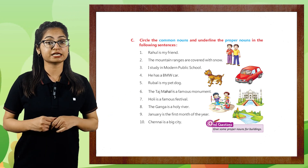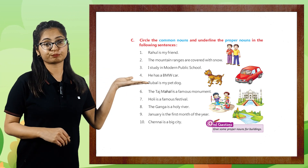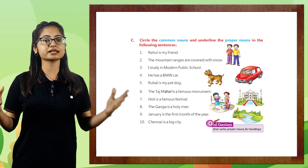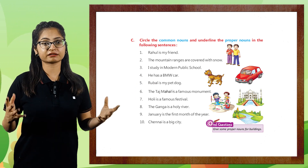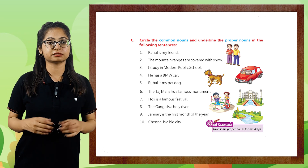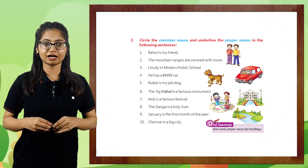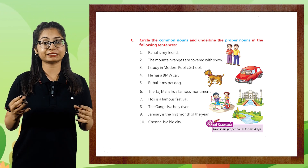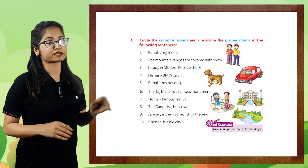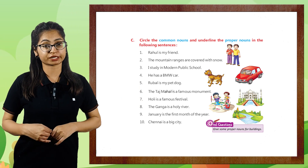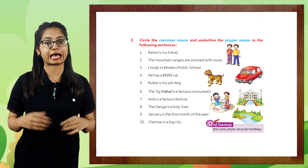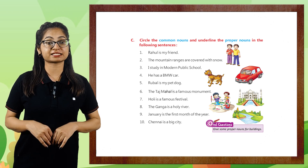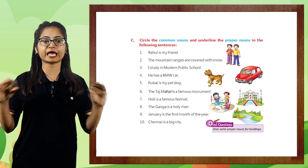'The Ganga is a holy river.' Here 'river' is a common noun and 'Ganga' is a proper noun. 'January is the first month of the year.' Month could be any, but here we have specified January, so 'January' is a proper noun and 'month' is a common noun. 'Chennai is a big city.' City could be anyone, so 'city' is a common noun and 'Chennai' is a proper noun.